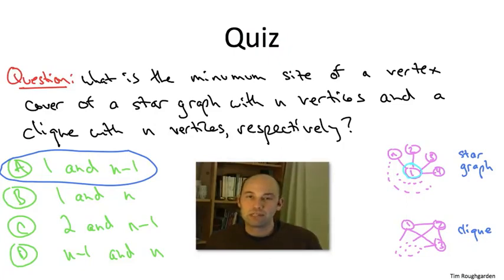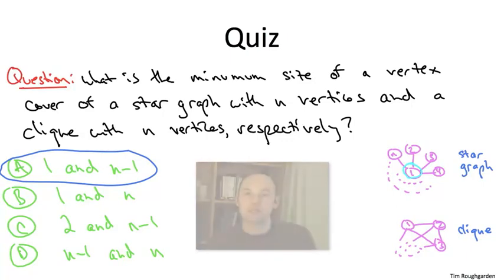Figuring out the minimum size of a vertex cover in these two special graphs probably didn't seem that hard, and it's not. But when you're talking about general graphs that you don't know anything about, computing the minimum cardinality vertex cover is, in fact, an NP-complete problem. There is no polynomial time algorithm that solves it, unless P equals NP.